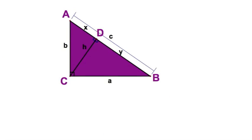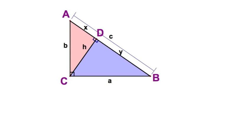Let's start with this triangle ABC, a right triangle with a right angle at C. The first thing we're going to do is split it into two triangles — three, actually, counting ABC itself — with this segment, the altitude to the hypotenuse. We've got a lot of theorems to come out of this, so let's get started.